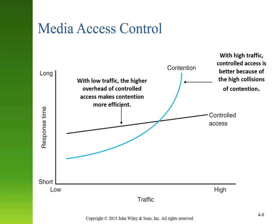Contention-based access works particularly well with small amounts of traffic — a small network with few devices or devices that aren't communicating frequently. Think about a dinner table with two or three friends: you don't need to raise your hand or seek permission to talk. But this breaks down as traffic increases. In a crowded room, without people raising their hands, you'd have many collisions and slow response times. Controlled access, where only the person with the token or who has been called on may speak, improves overall communication.